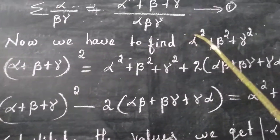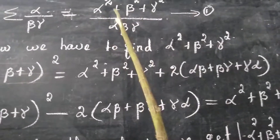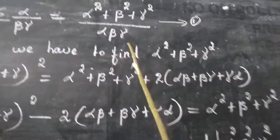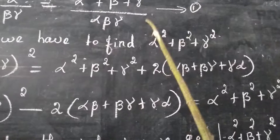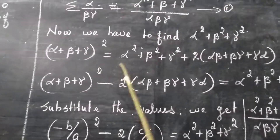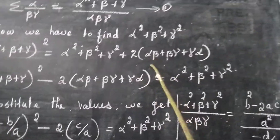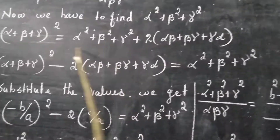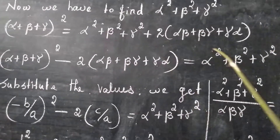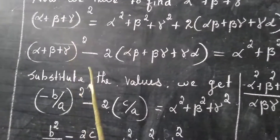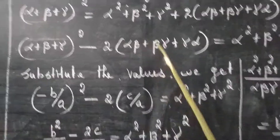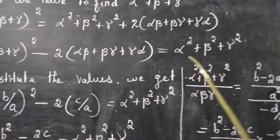Now we have to find alpha square plus beta square plus gamma square. The denominator alpha beta gamma we already know — that is the product of the roots we found. For the numerator, we use the formula: alpha plus beta plus gamma, whole squared, equals alpha square plus beta square plus gamma square plus 2 times alpha beta plus beta gamma plus gamma alpha. Rearranging, alpha square plus beta square plus gamma square equals alpha plus beta plus gamma whole squared minus 2 times alpha beta plus beta gamma plus gamma alpha.